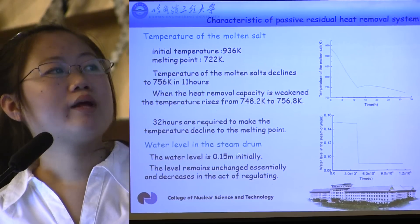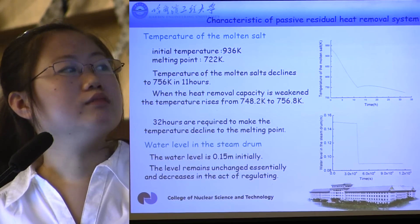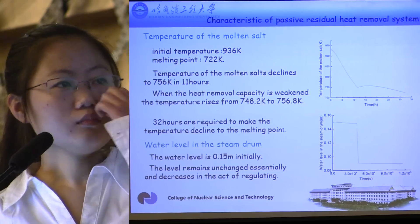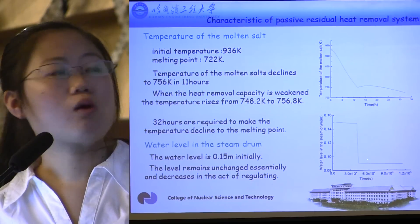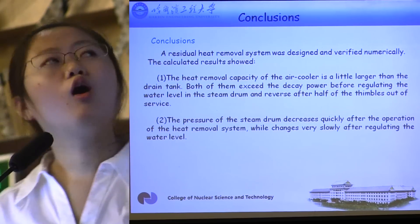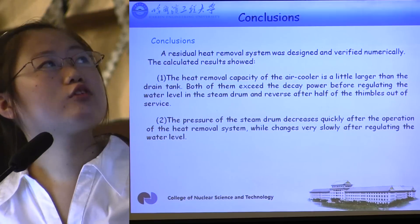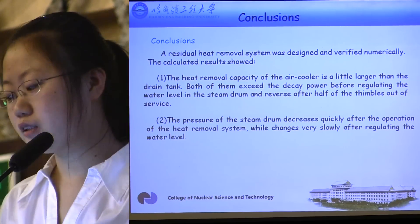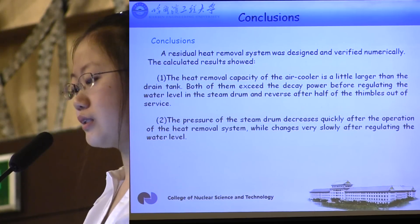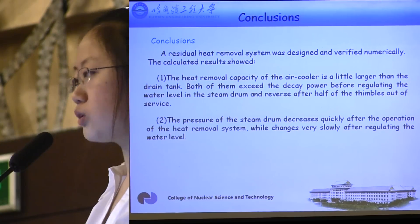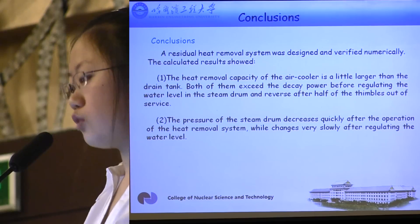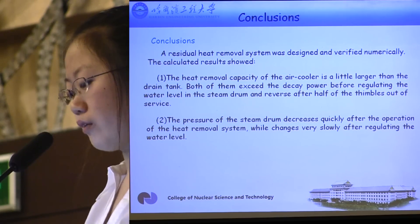The water level in the steam drum is 0.15 initially. The level remains essentially unchanged, then decreases during regulation. After the regulation process, the water level stays unchanged again. By analyzing, the conclusions are that the heat removal capacity of the air cooler is slightly larger than the drain tank, and both exceed the decay power before regulating the water level in the steam drum, then fall below it after half of the thimbles go out of service. The steam drum pressure decreases quickly after operation of the heat removal system, while it changes very slowly after regulating the water level.